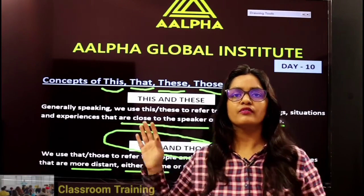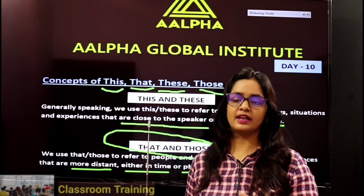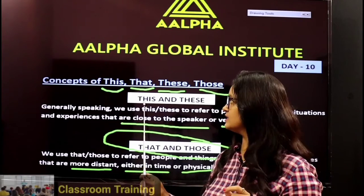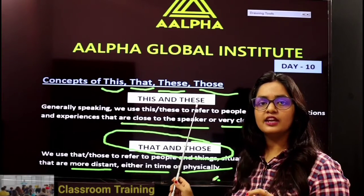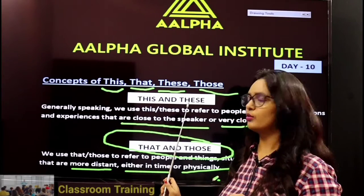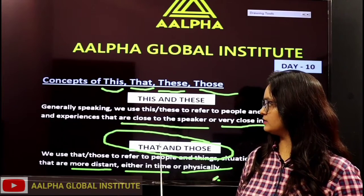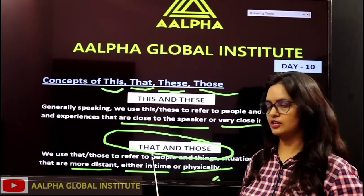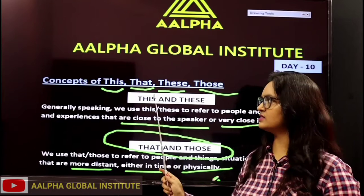So to summarize: 'this' and 'these' are used for things that are near. 'This' is singular and 'these' is plural. On the other hand, 'that' and 'those' are used for things that are at a distance. 'That' is singular and 'those' is plural — it's the exact opposite of this and these.